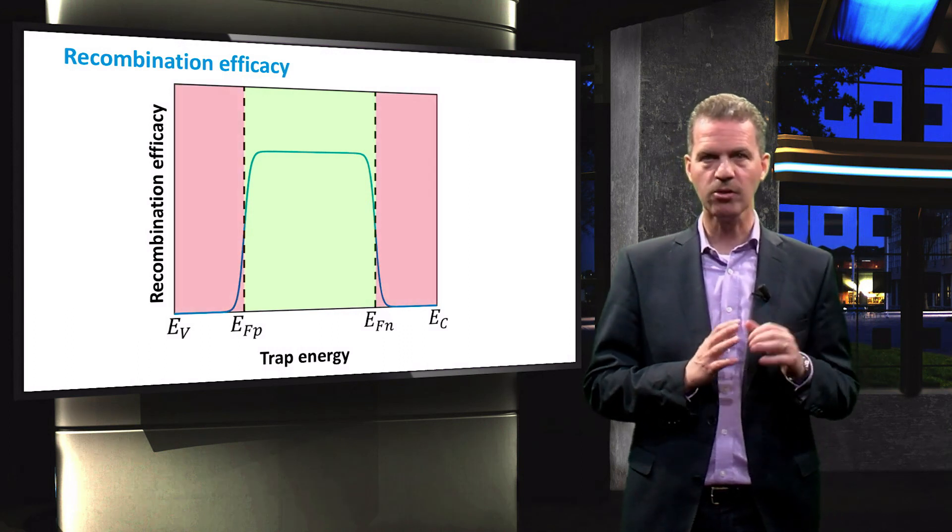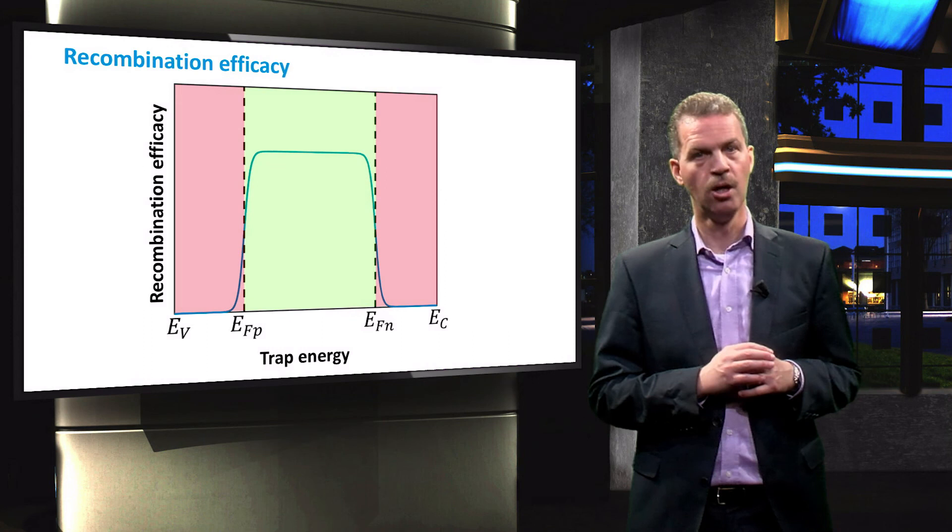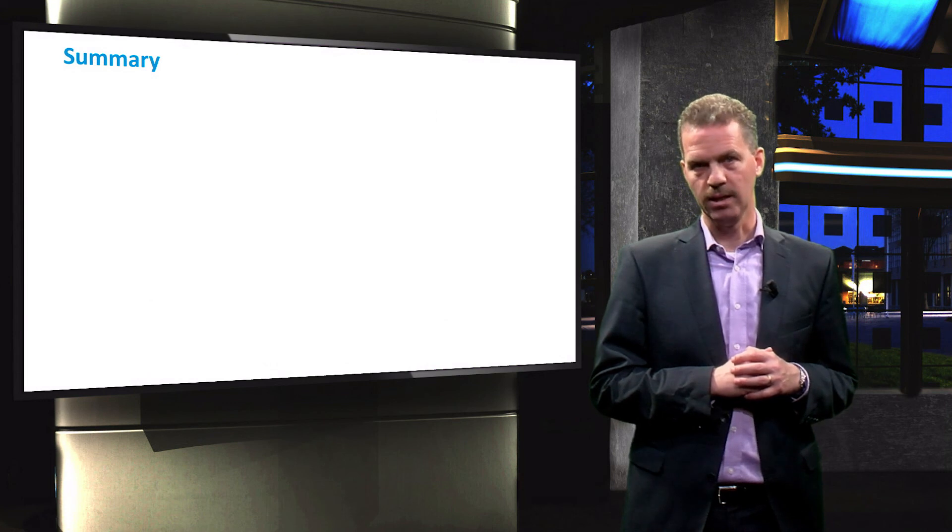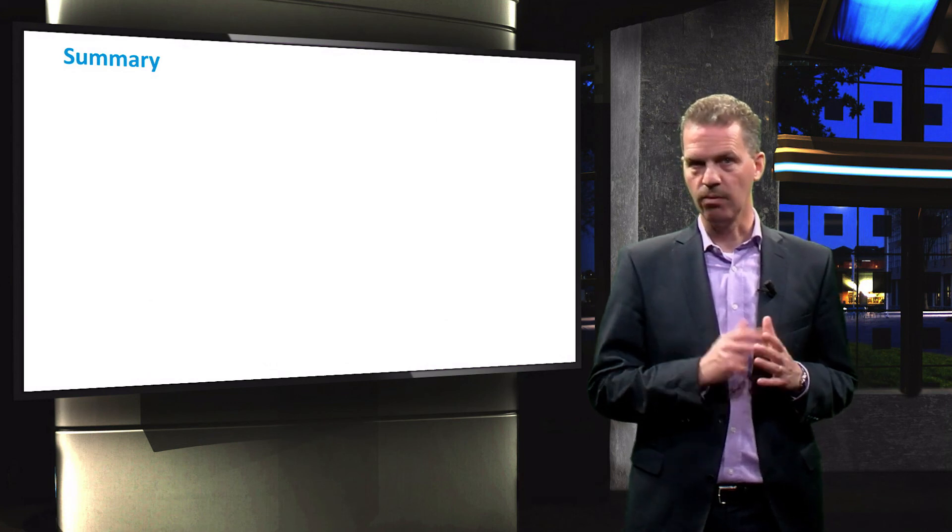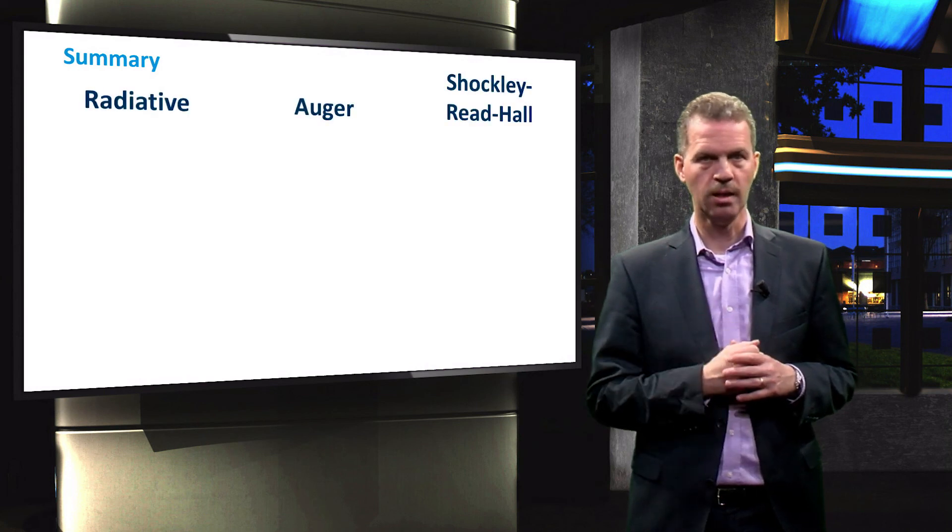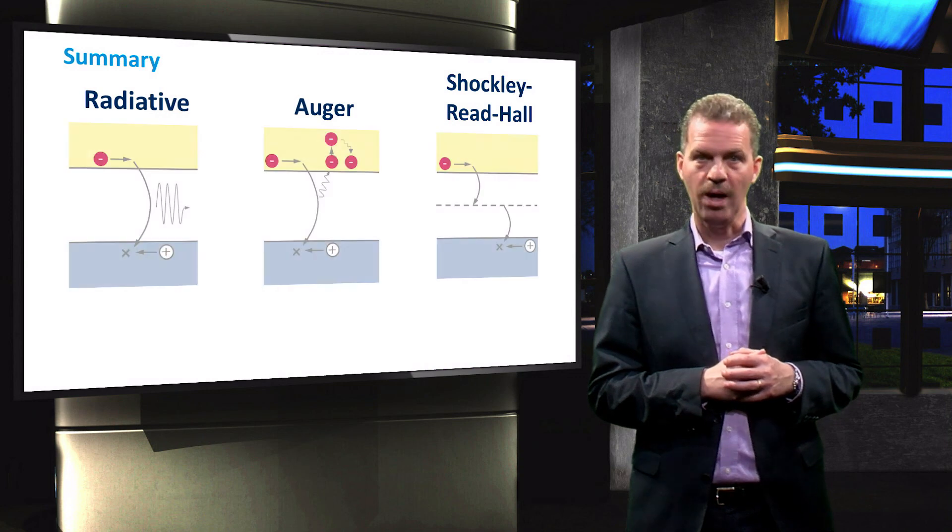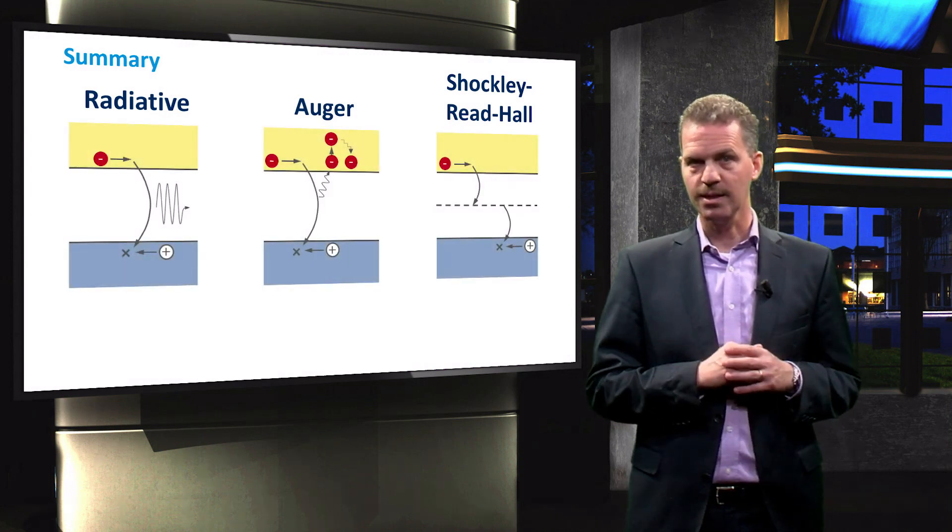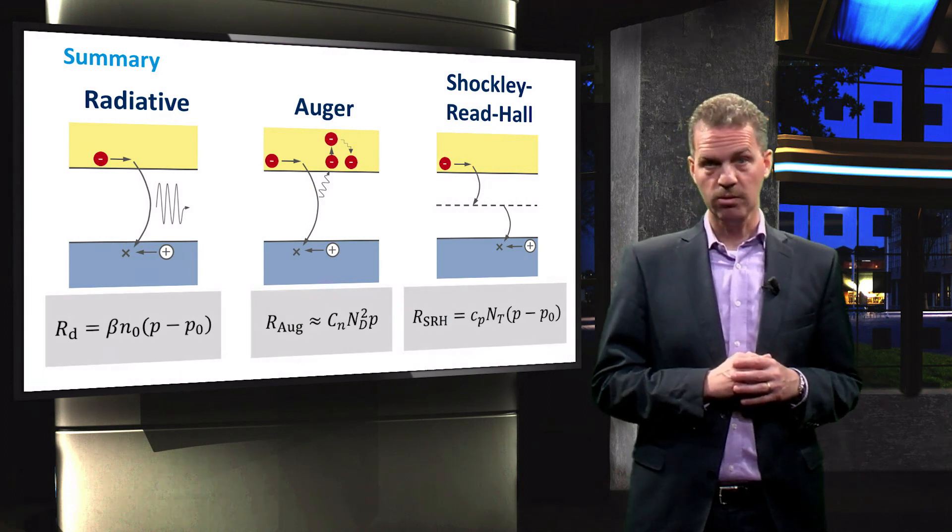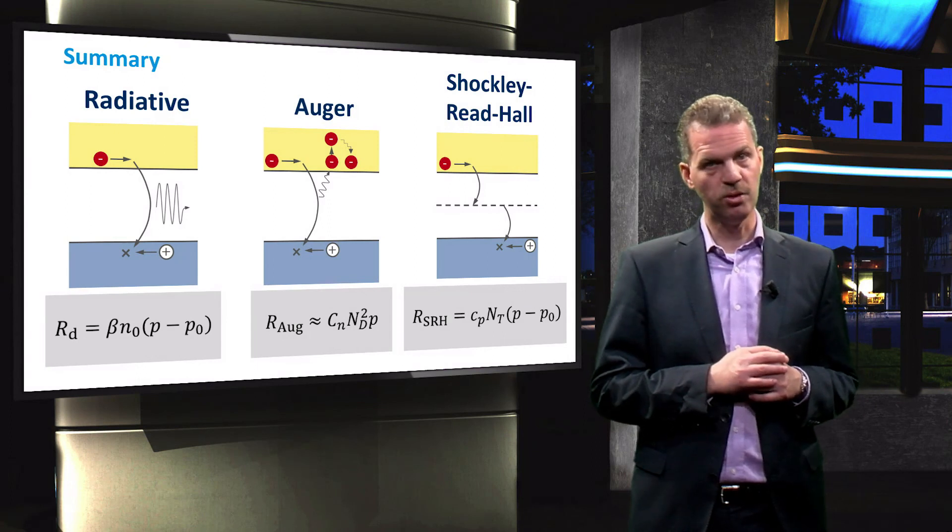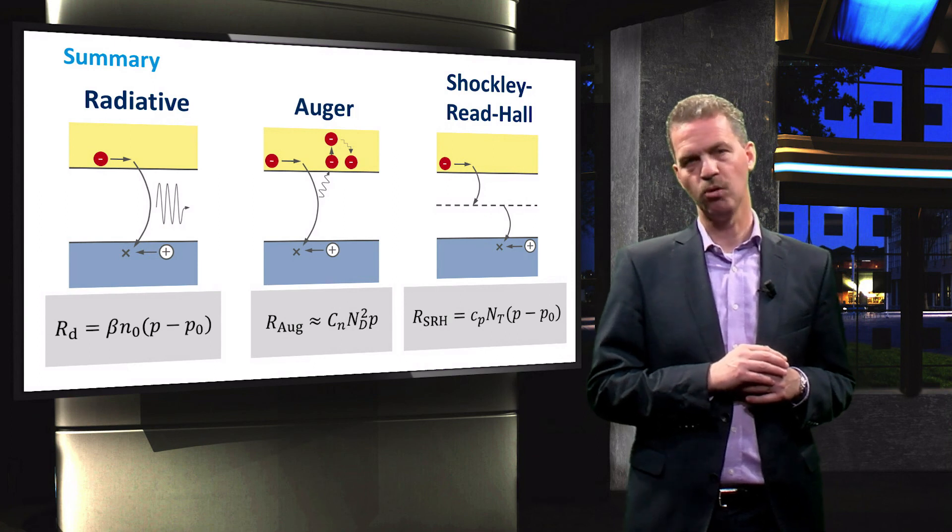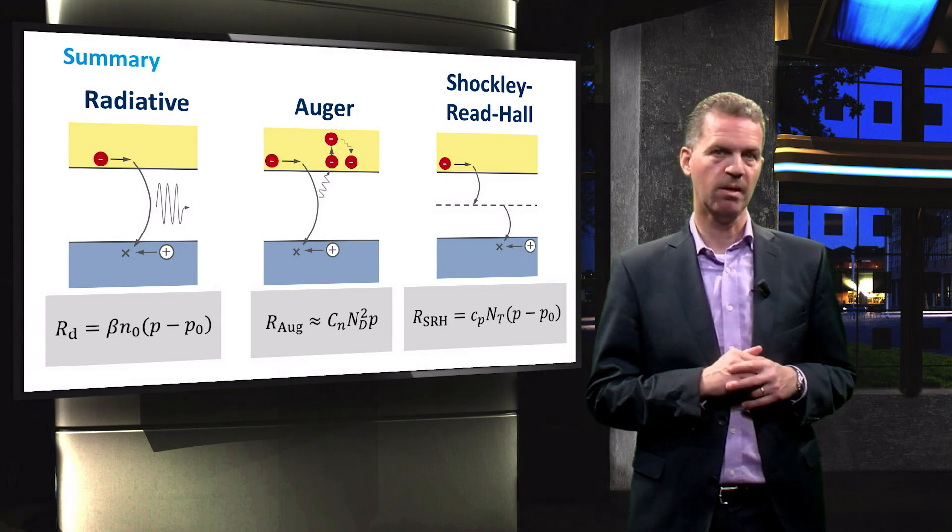Now to recapitulate, we have gained insight in three recombination processes: radiative, Auger, and Shockley-Reed Hall. We have discussed the mechanisms underlying these processes, and we have derived their recombination rates. With these equations, together with our knowledge about the charge diffusion and drift, we can now take the next step, the Amparo transport equation, which is presented in the upcoming video.